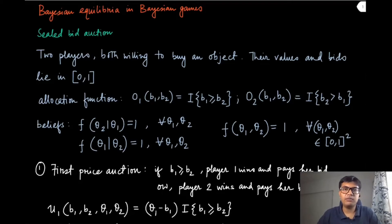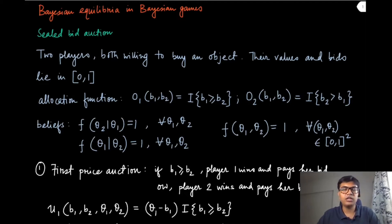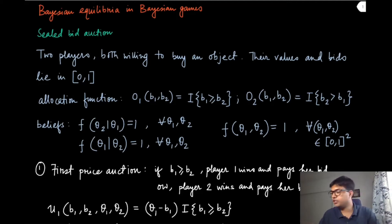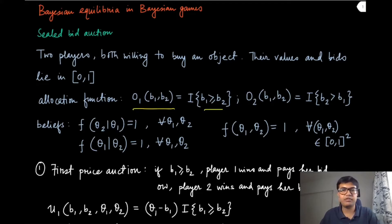Now that we have defined the Bayesian equilibrium in Bayesian games, let us look at some examples. This is the same sealed-bid auction from the previous module. There are two players, both willing to buy one single indivisible object, with values and bids in the interval [0,1]. The allocation function gives the object to the highest bidder, breaking ties in favor of player one — formally, the indicator that b1 is at least as large as b2.